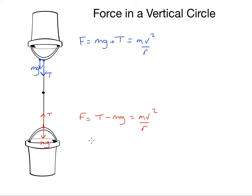Rearranging that equation for T, I end up with the expression T equals mv squared over r plus mg at the bottom of the circle. And going back to the top, I end with the expression T equals mv squared over r minus mg.